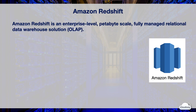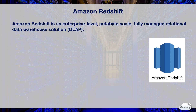Amazon Redshift is an enterprise-level, petabyte-scale, fully managed data warehouse solution for online analytical processing. Imagine you have an online shopping site serving hundreds of thousands of customers — you can analyze popular products across millions of records and summarize them on weekly and monthly bases by category. Traditional databases are not optimized for such complex queries on very large datasets, so you need an enterprise-level data warehouse. Redshift makes it simple and cost-effective to analyze all your data using standard SQL and your existing BI tools. It allows you to run complex analytic queries against terabytes to petabytes of structured data, using sophisticated query optimization, columnar storage on high-performance storage, and massively parallel query execution.